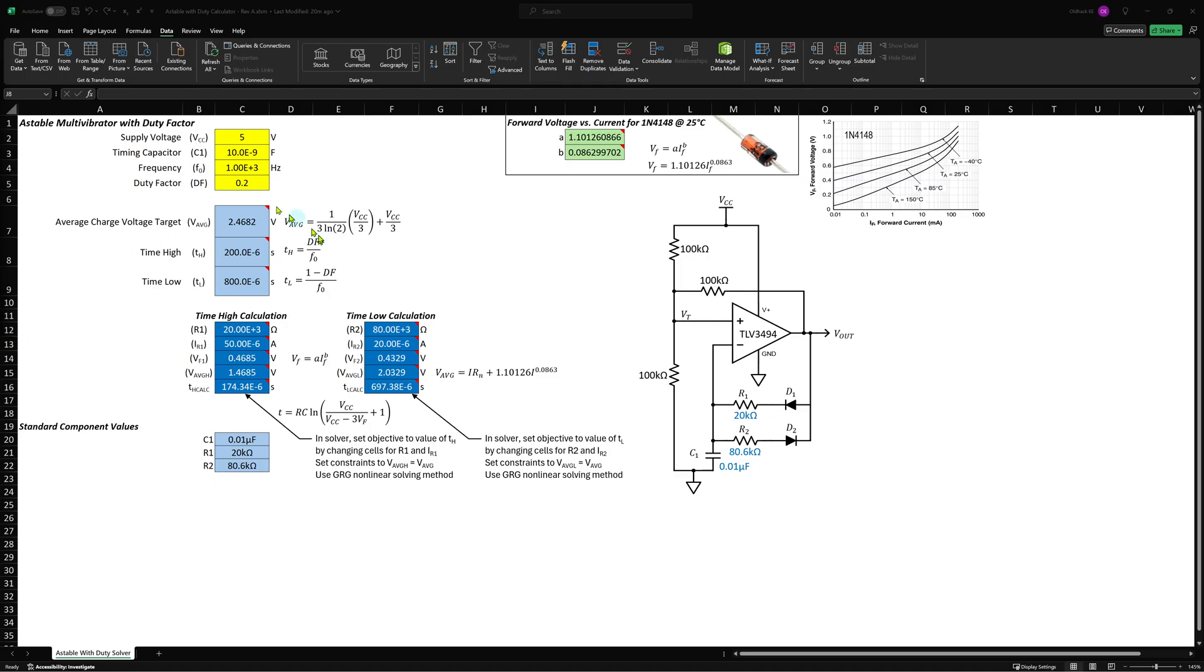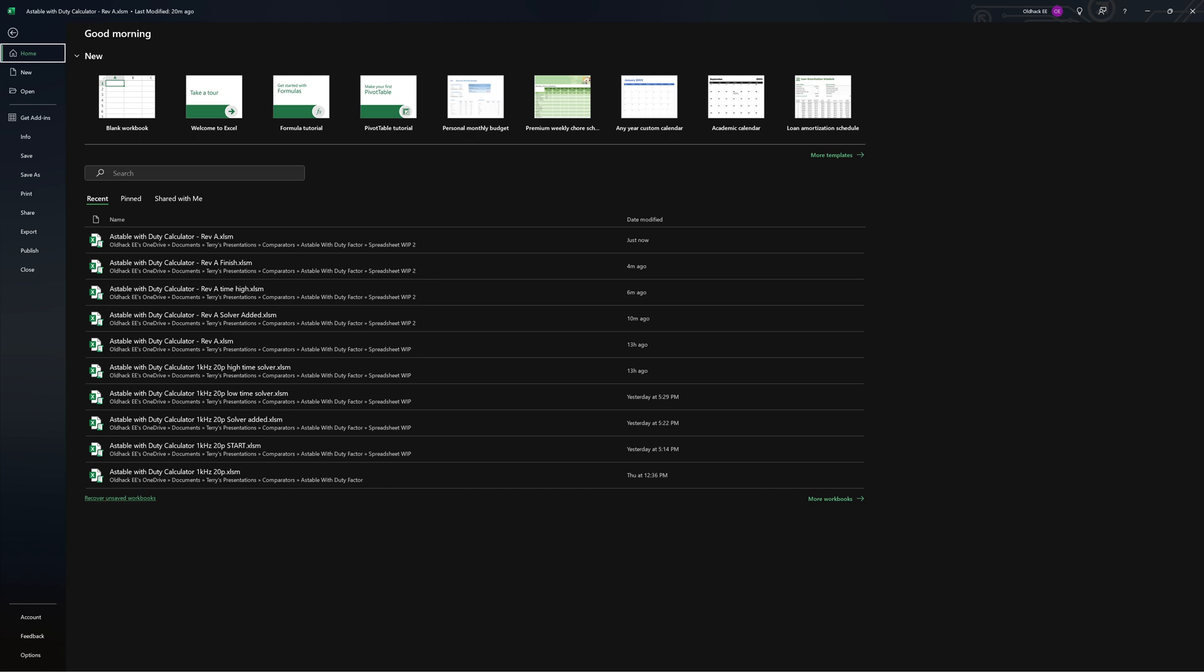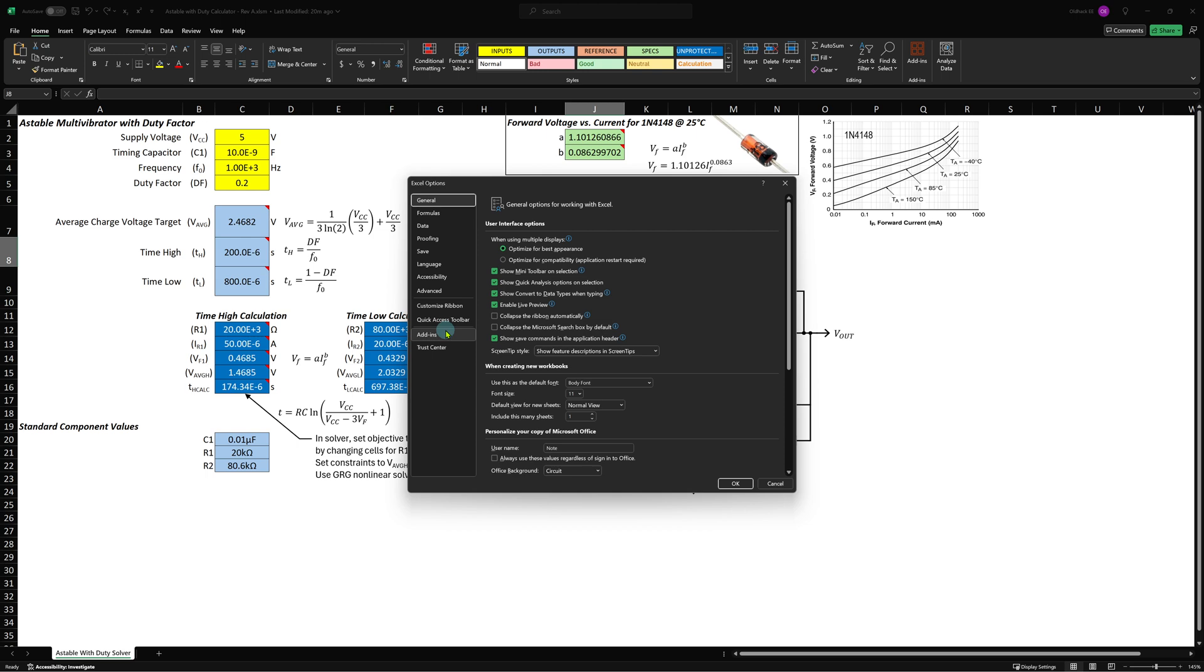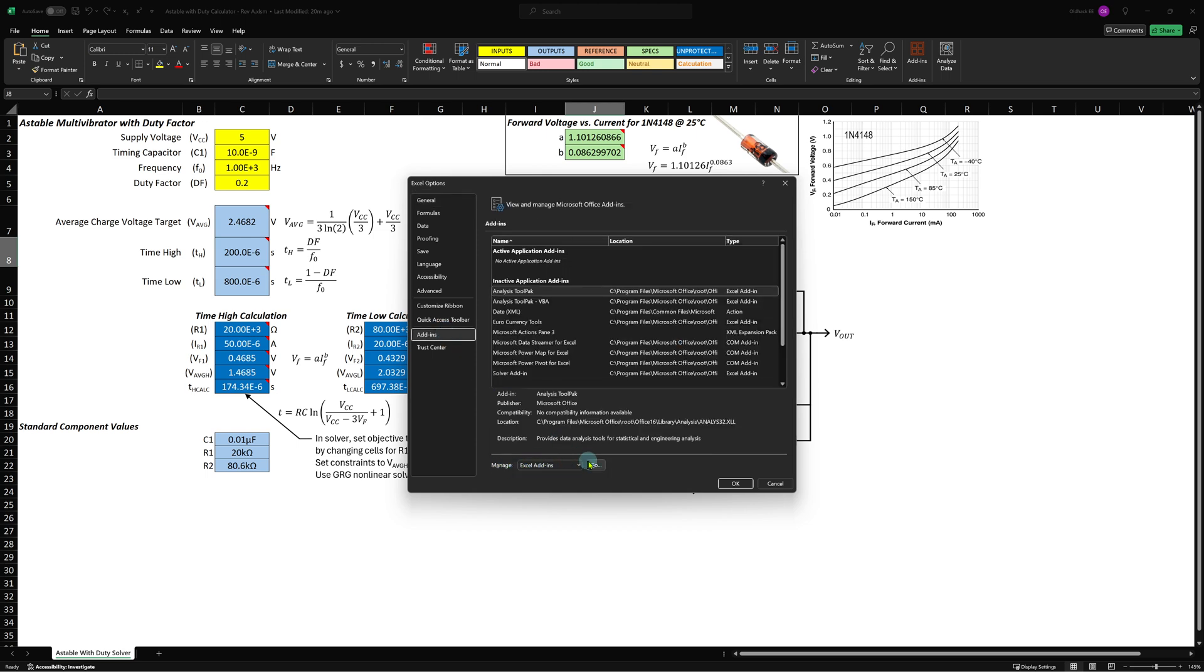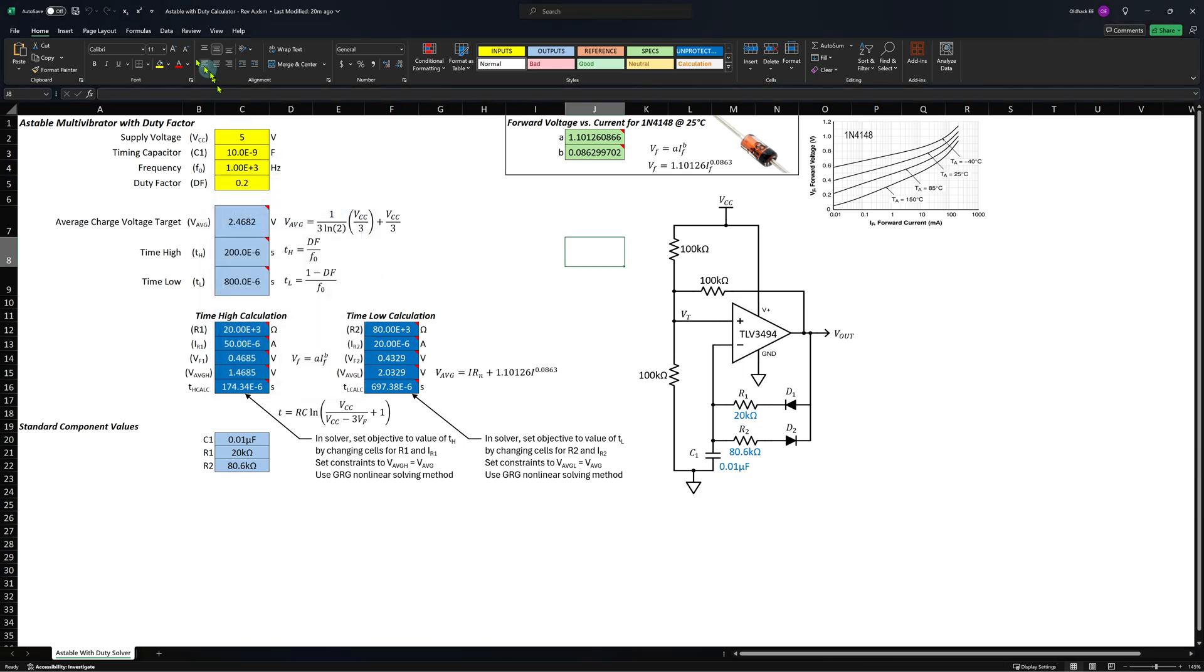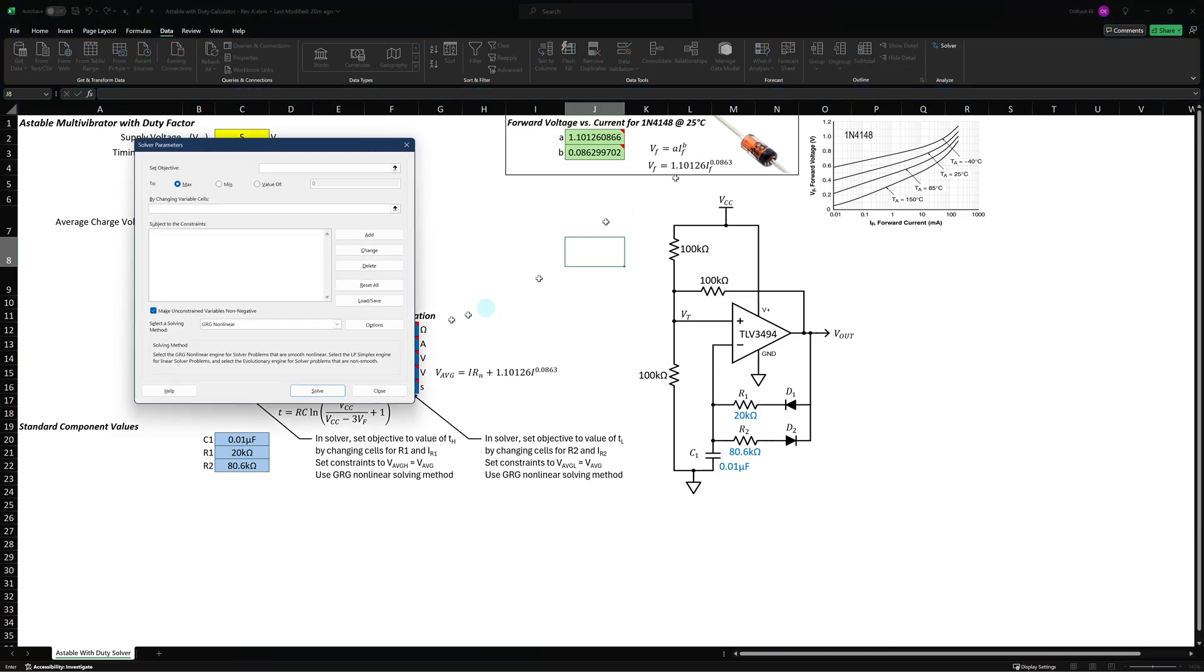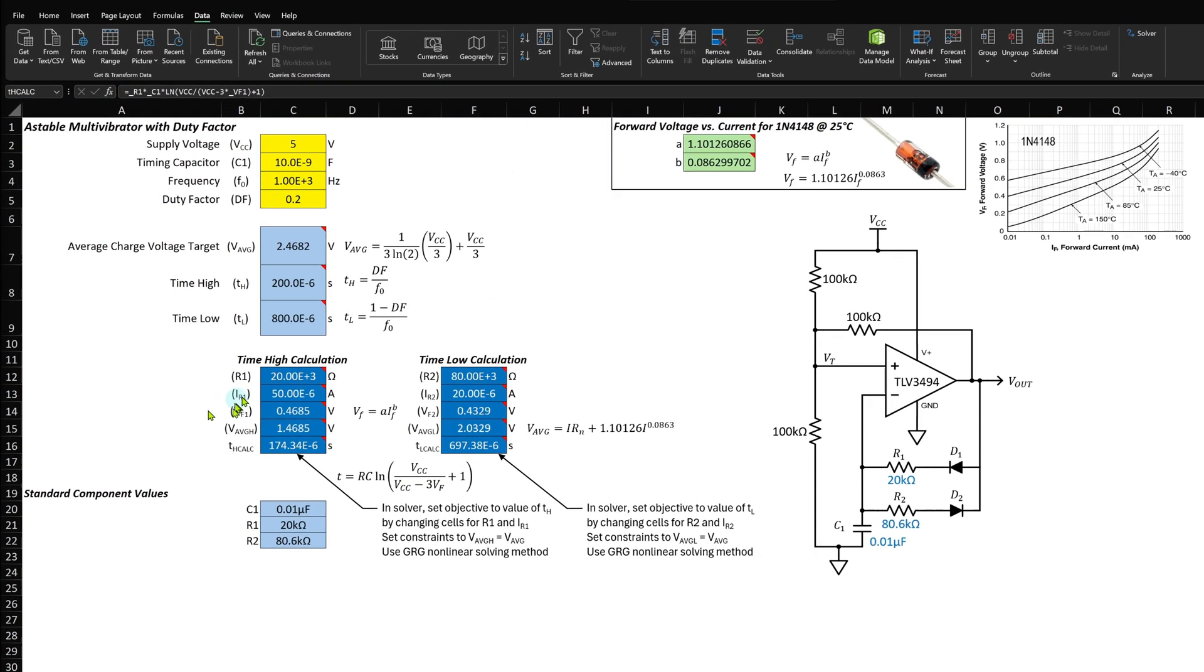The solver is an add-in for Excel, which is not included by default. From the file menu, select Options, then Add-Ins, then Manage Excel Add-Ins, and Go. Check the box next to the Solver Add-In and click OK. Now, from the Data tab, the Solver tool appears. Now let's run the solver.